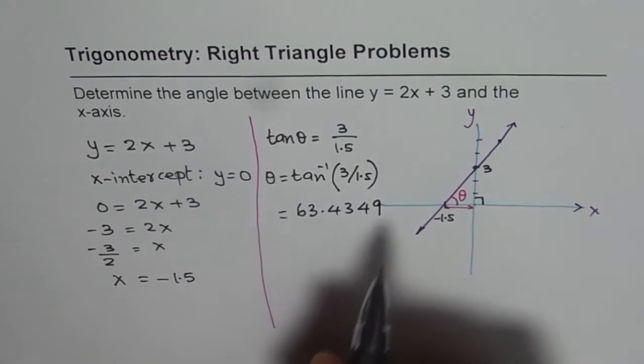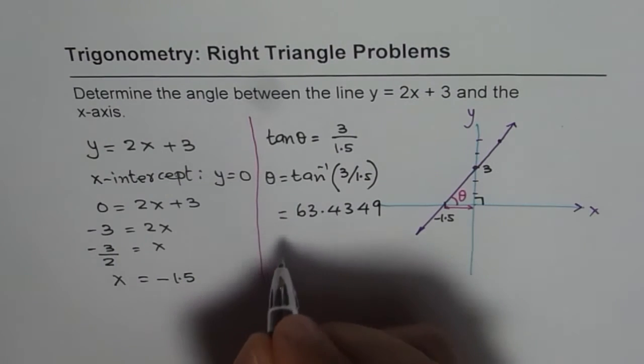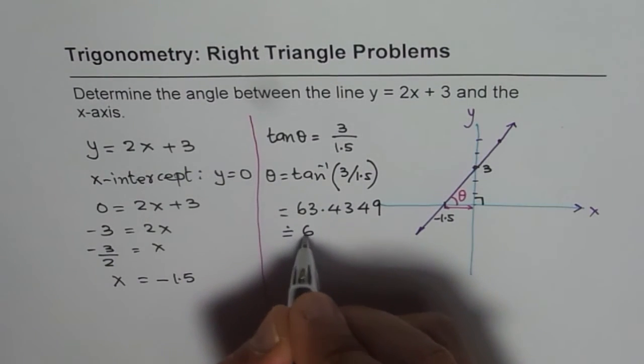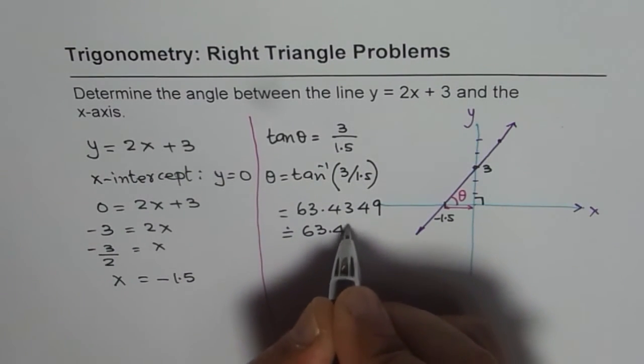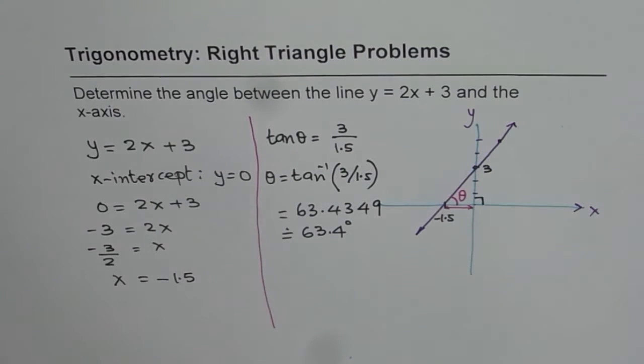Which we can always round to one decimal place and say approximately 63.4 degrees. So that is how we can find the angle which a line makes with the x-axis.